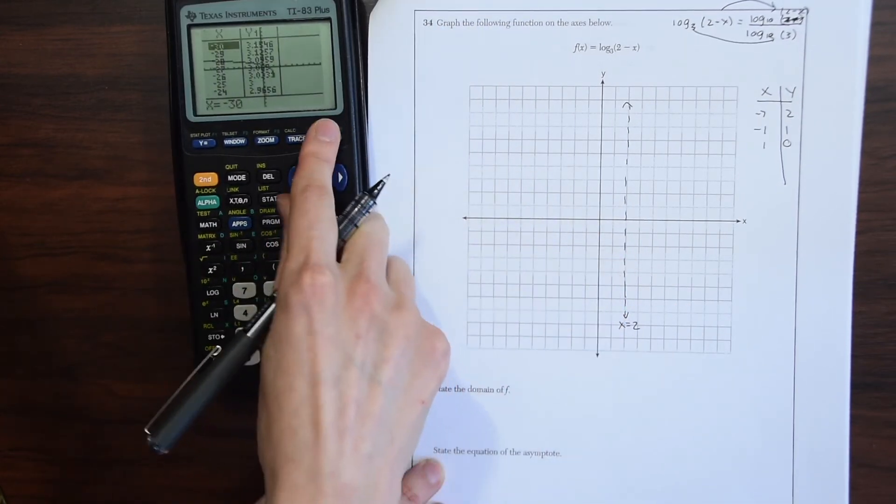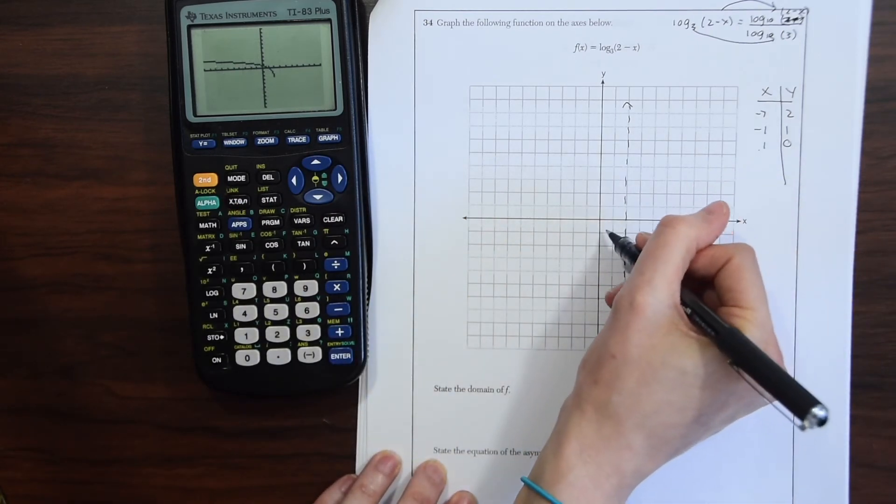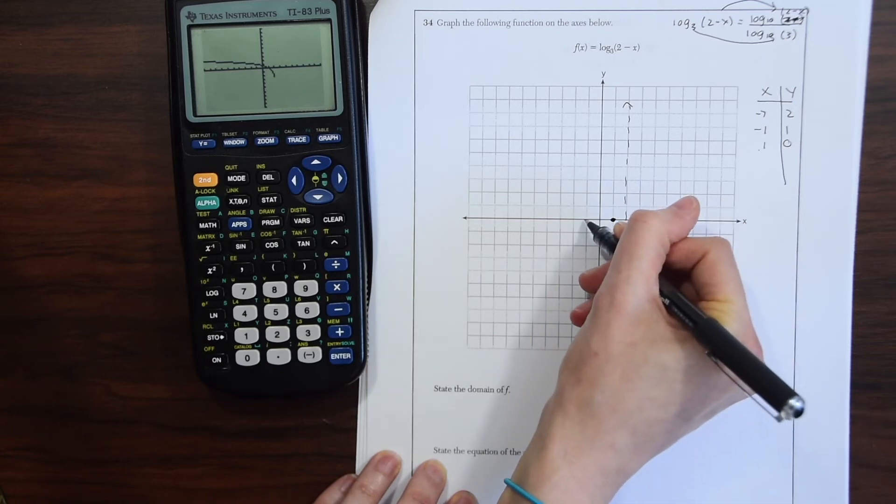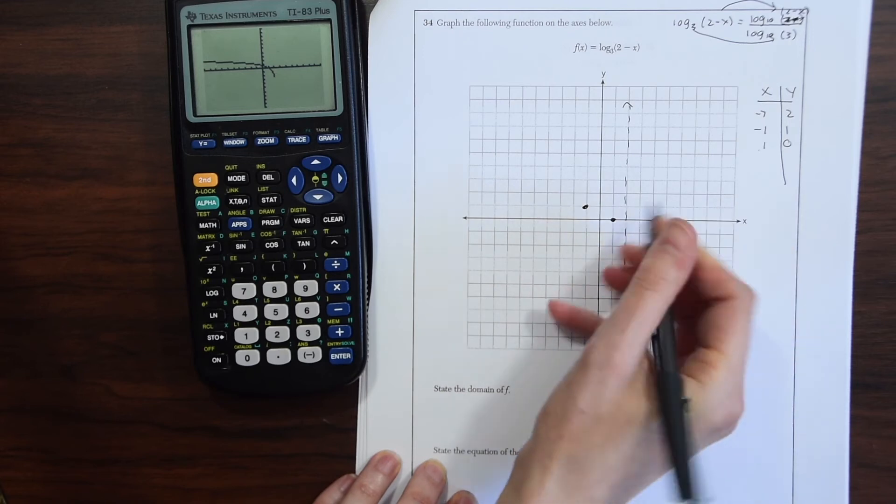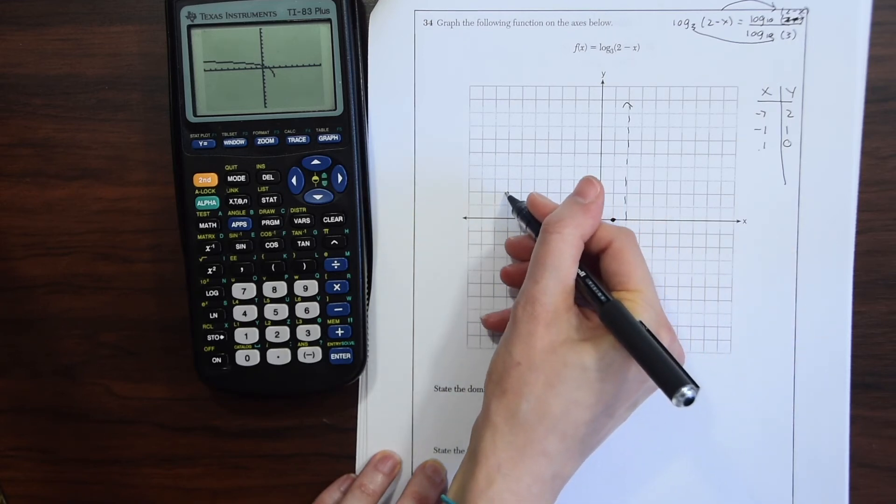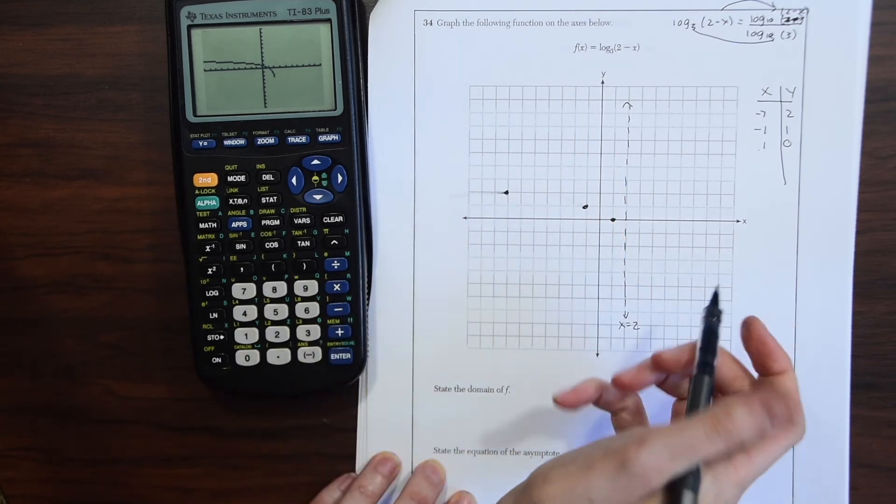It's going to be going this way, right? So we start at (1, 0), then (-1, 1), and then (-7, 2). And then we're going to connect these dots and it's just going to go like that.